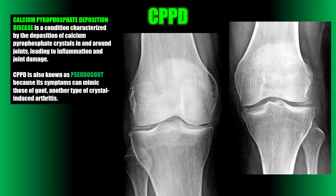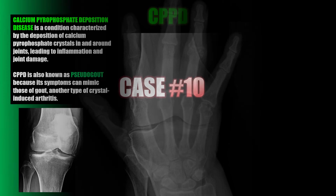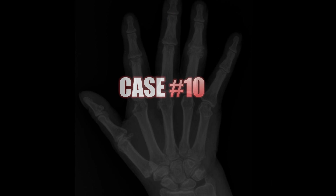CPPD is a condition characterized by the deposition of calcium pyrophosphate crystals in and around the joints, leading to inflammation and joint damage. CPPD is also known as pseudogout because its symptoms can mimic those of gout, which is another type of crystal-induced arthritis. Case number ten.